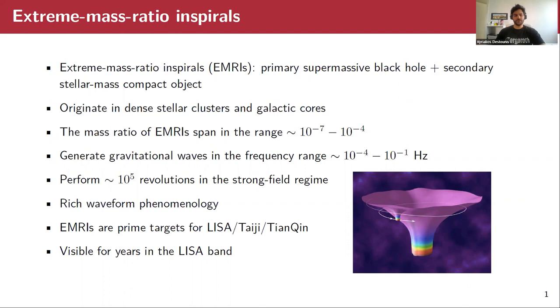These very interesting sources of gravitational radiation emit gravitational waves in the frequency range of 10 to the minus 4 to 10 to the minus 1 hertz. They perform a lot of revolutions, 10 to the 5, in a strong field, therefore they can trace very well the space-time background of the supermassive black hole. They have very rich waveform phenomenology and they are prime targets for space-based detectors such as LISA, Taiji, and TianQin. They will be visible for years, at least in the LISA band. Therefore, we expect a lot of interesting waveforms from them.